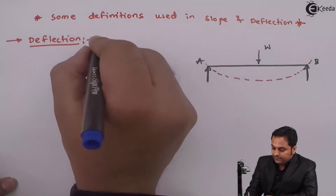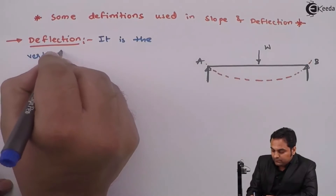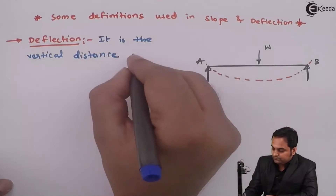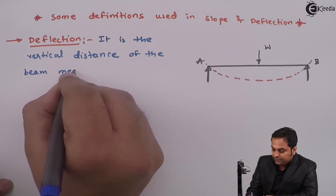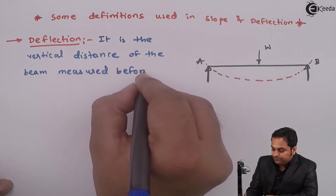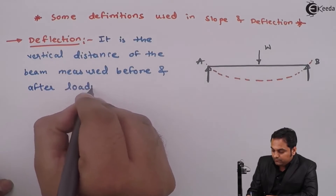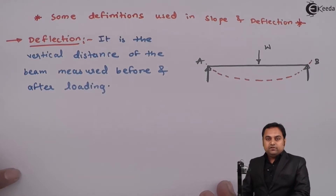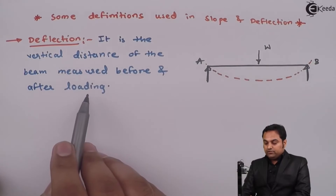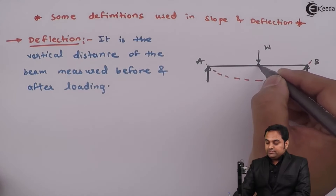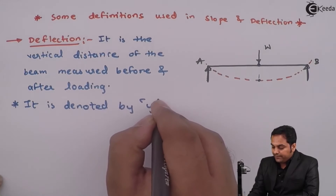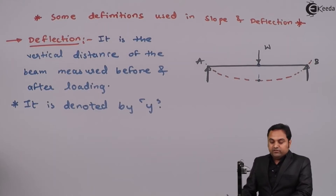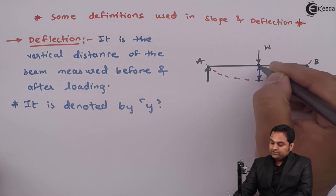The first definition is deflection. It is the vertical distance of the beam measured before and after loading. Before loading the beam is at its original position, and after loading it reaches the deflected position. This distance is called deflection and it is denoted by Y. In this chapter we are going to denote the deflection by Y.